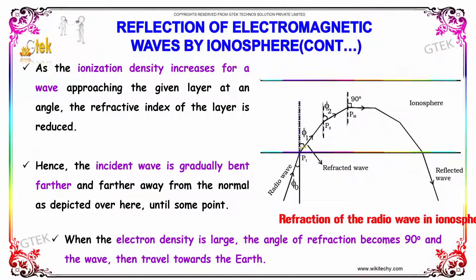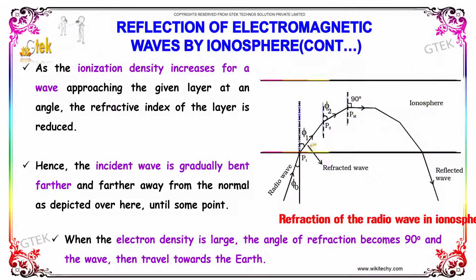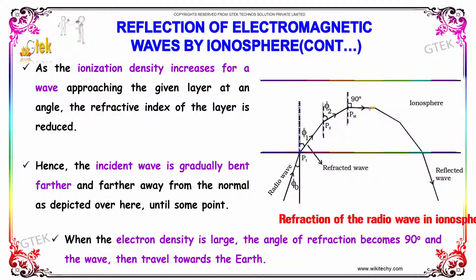As the ionization density increases for a wave approaching a given layer at an angle, the refractive index of the layer is reduced. You are able to see it here. Hence, the incident wave is gradually bent farther and farther away from the normal, as depicted, until some point.